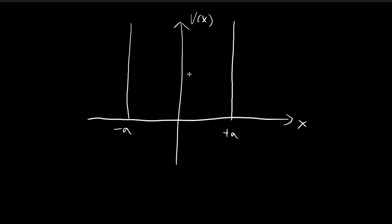We're going to deal with the infinite square well that is symmetrical. This is different from the example in the book, where the infinite square well started from x equal to 0 all the way to x equal to a. Now we've pushed the wall back to x equal to negative a, giving us a wider, symmetrical well centered at the origin.